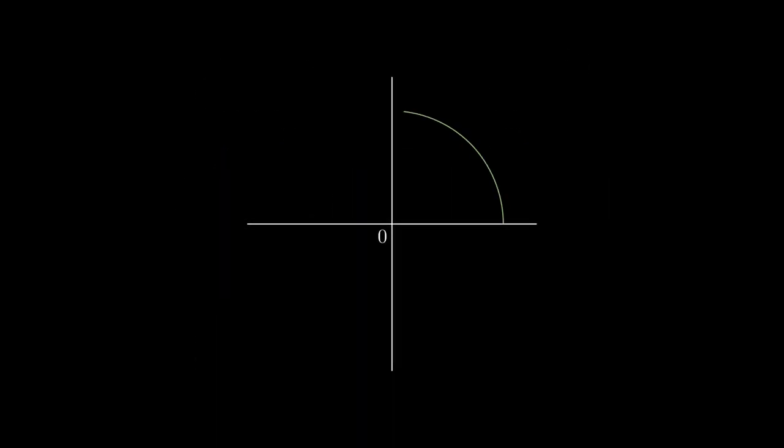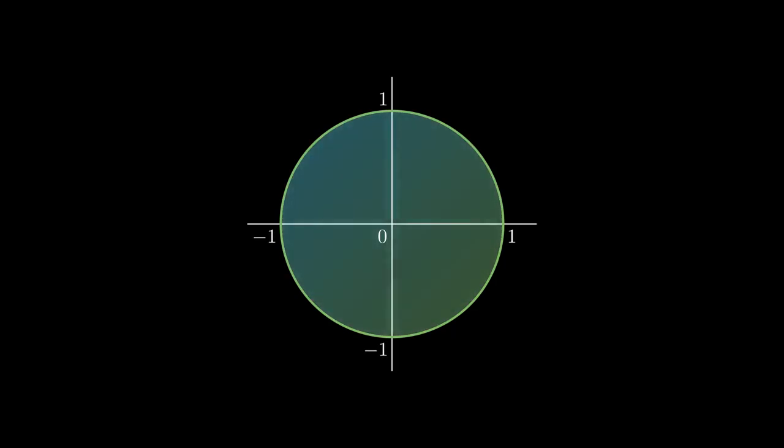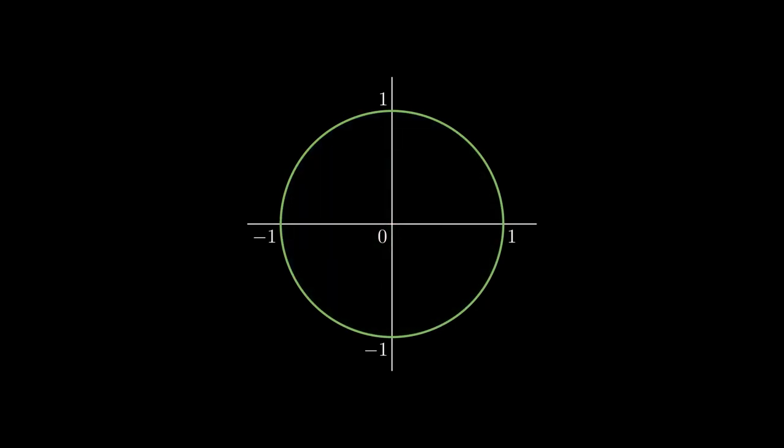We can first consider a circle with radius 1. We are interested in finding what is the area enclosed by this circle. To make things simpler, let's look at the top right portion of the circle, also known as the first quadrant.